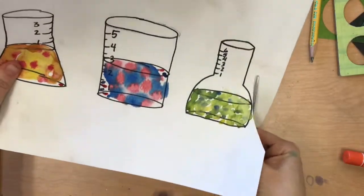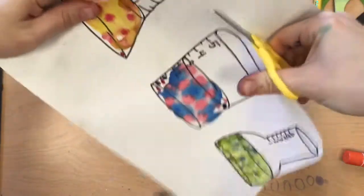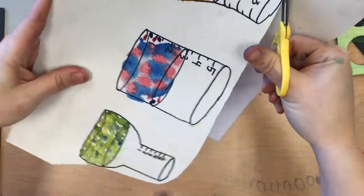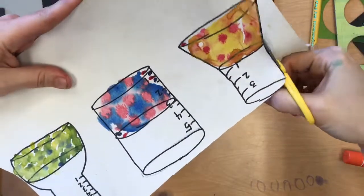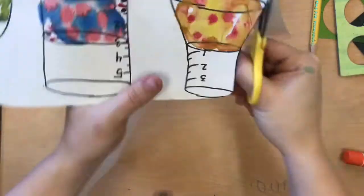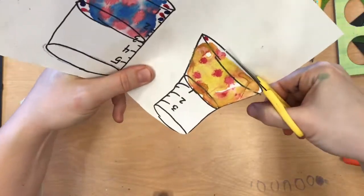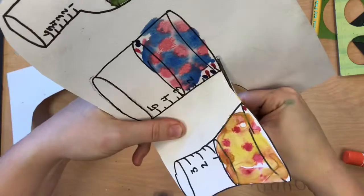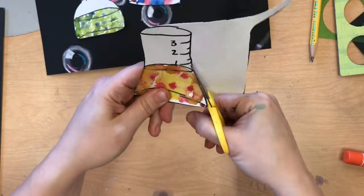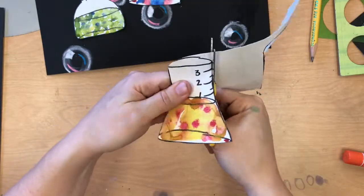So your job is to then cut out nicely your three beakers. These were what we made last time. Carefully cut right on the black line. We have nice thick black lines to cut on. And once you are finished cutting out all three beakers, you can decide on your composition.